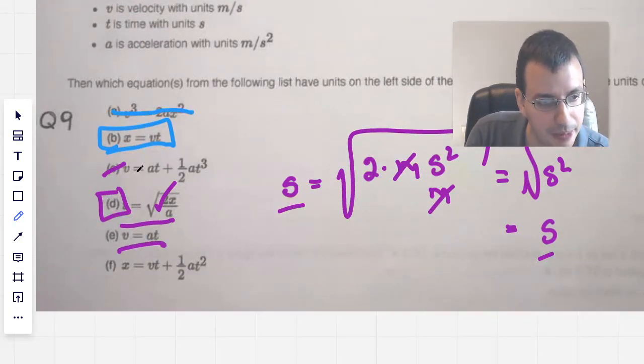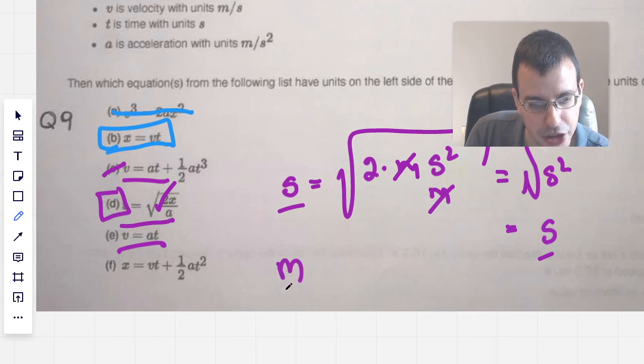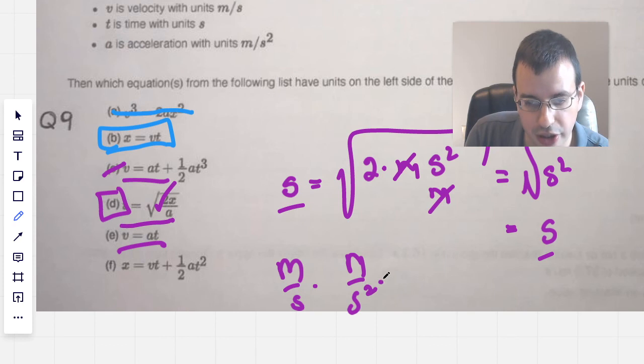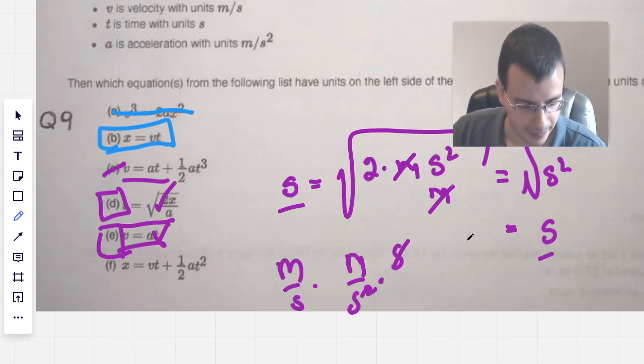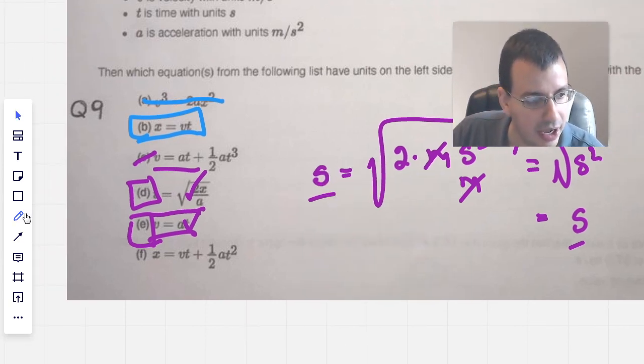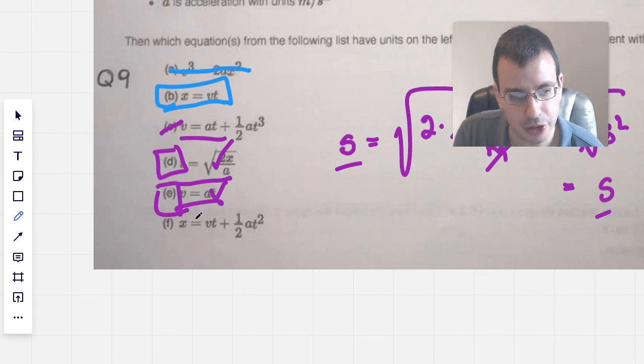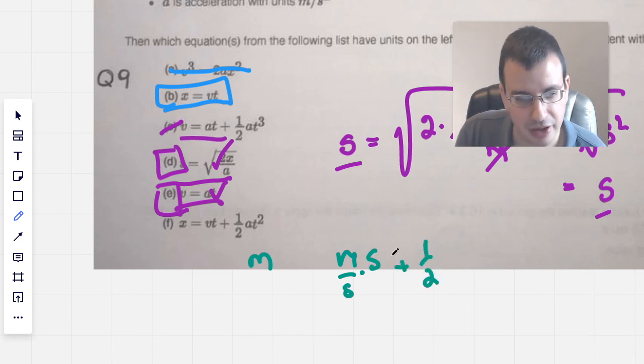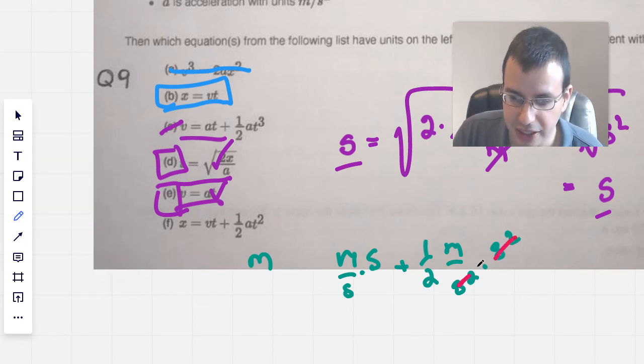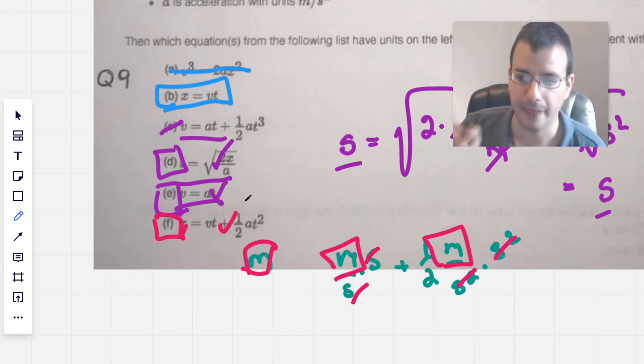All right. This one, we already did this one up here. So we have meters per second. And then we have meters per second squared times second. Cancel, cancel. Meter per second. Meter per second. That one's good as well. And this one looks like our kinematic equation we just wrote up on the other side. So I have a feeling, a feels, that this one's going to work too. So this side we have meters. Over here we have meters per second times second. And we have a one half. And this is going to be meters per second squared times second squared. Get my canceling color out. Red. Cancel, cancel. Cancel, cancel. We have meters, meters, meters. So this one works as well.